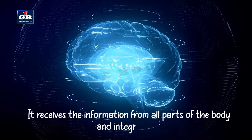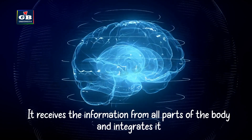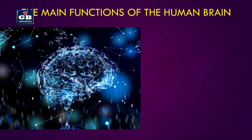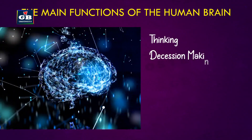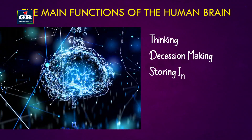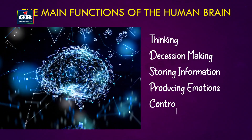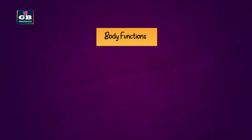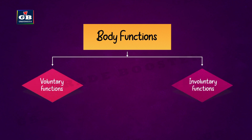The brain is the main coordinating center of our body. It receives information from all parts of the body and integrates it. The main functions of our brain are thinking, decision making, storing information, producing emotions, and controlling body functions.